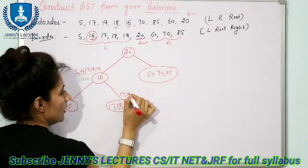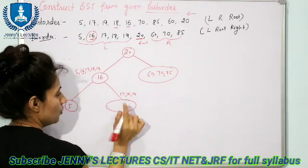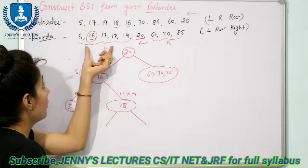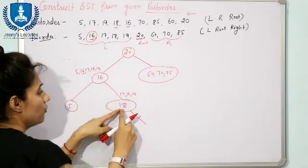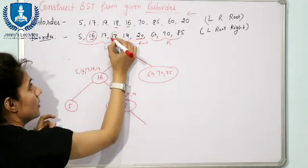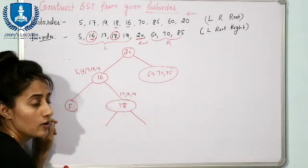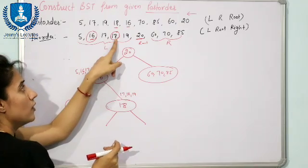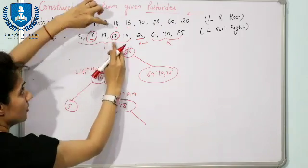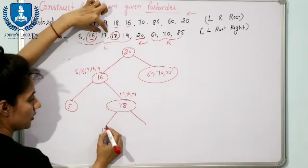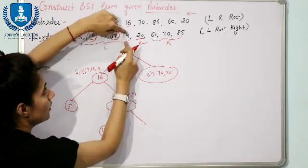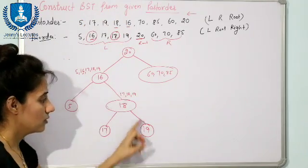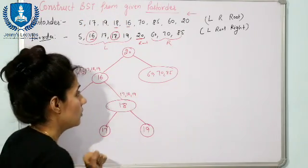Out of {17, 18, 19}, 18 is the root. Locate 18 in the inorder traversal. To the left of 18 we have only 17, so 17 goes on the left. To the right of 18 we have only 19, so 19 goes on the right. The left subtree construction is now complete.